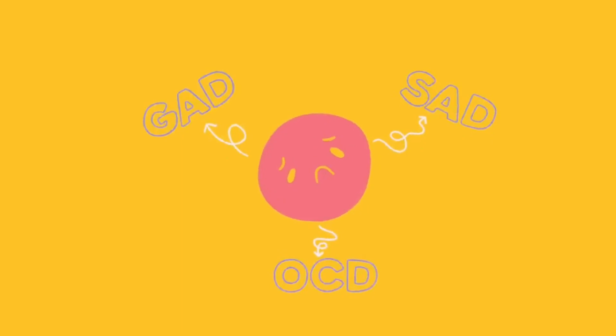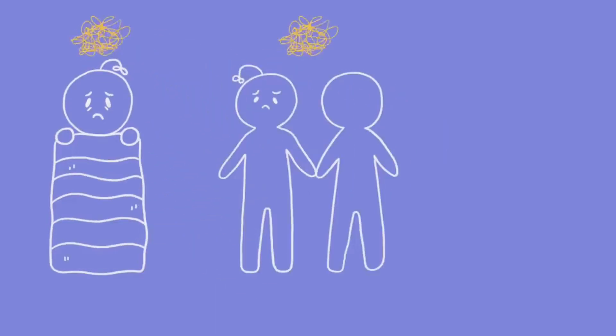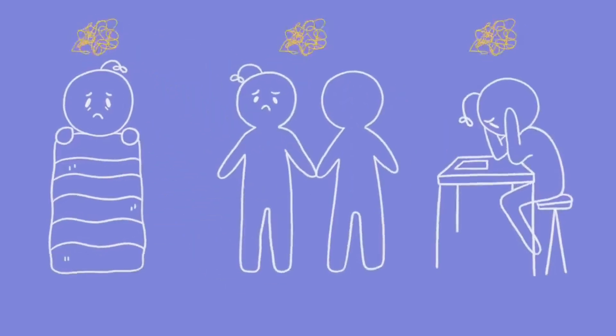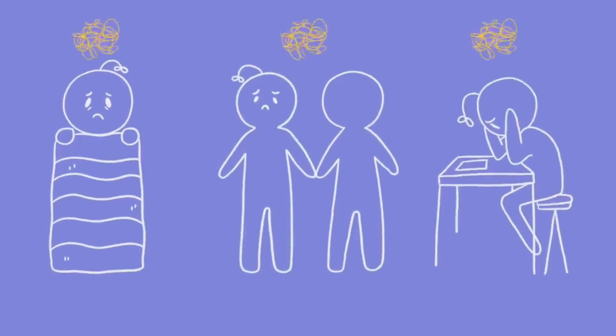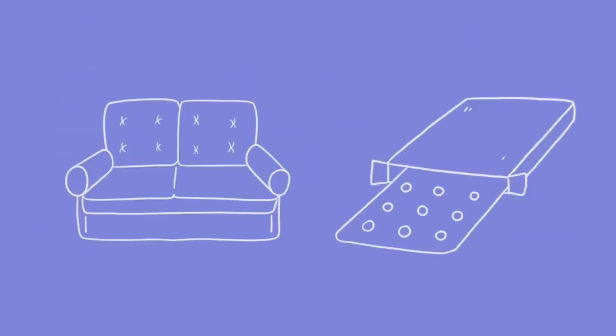Anxiety disorders come in a few varieties: Generalized Anxiety Disorder (GAD), Panic Disorder, Social Anxiety Disorder (SAD), and Obsessive Compulsive Disorder (OCD). They're all characterized by nearly uncontrollable worry that messes with several aspects of daily life, such as sleep, relationships, school, and work. The good news is there are several treatment options available, which include different types of therapy and medication.